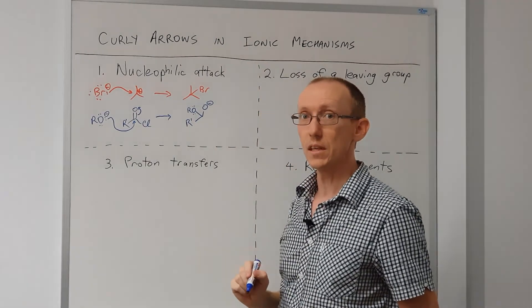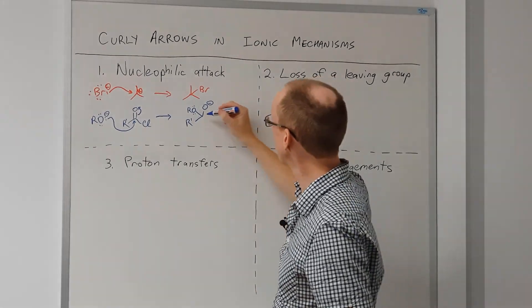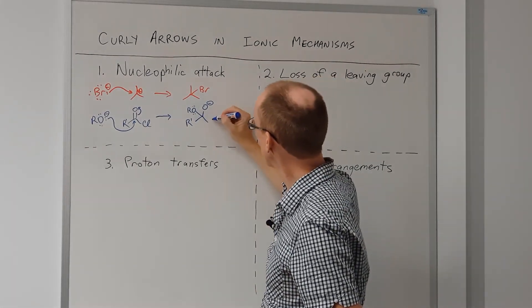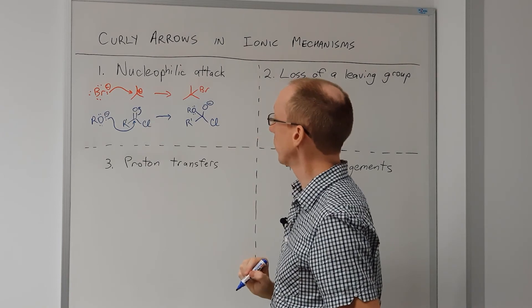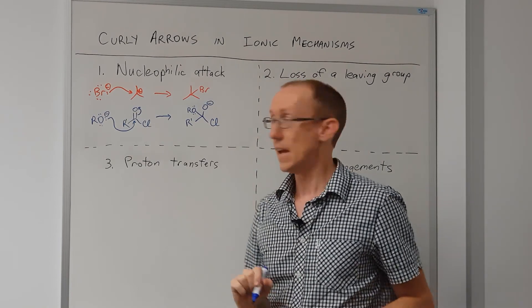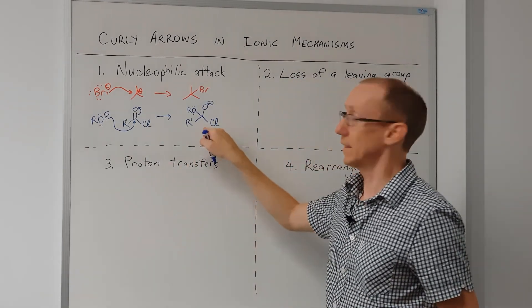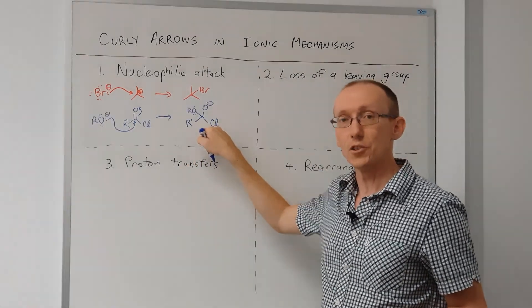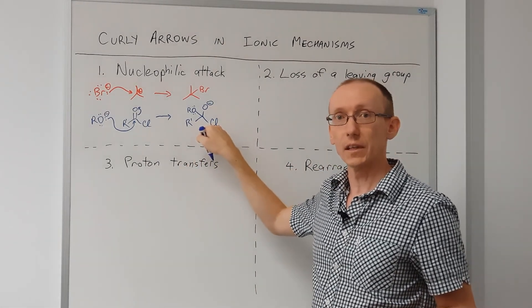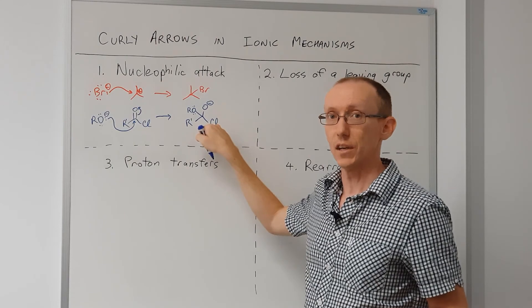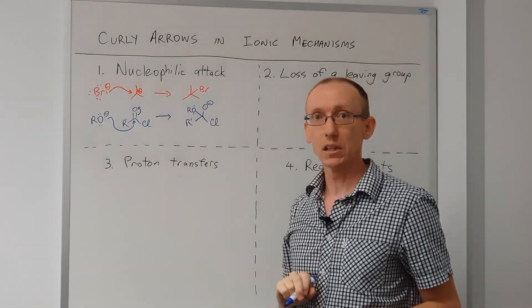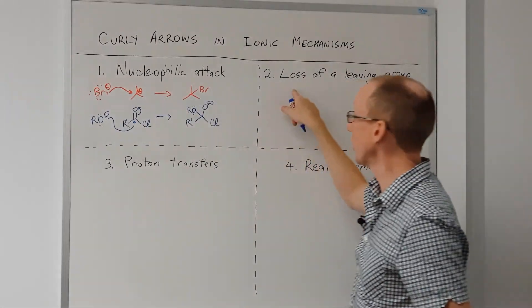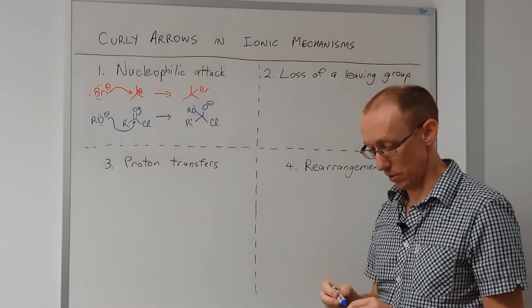There's our new bond to the alkoxy group and our chloride. That is all we need to show for the nucleophilic attack part of this reaction. The next step — loss of the leaving group — is what we'll go on to now.